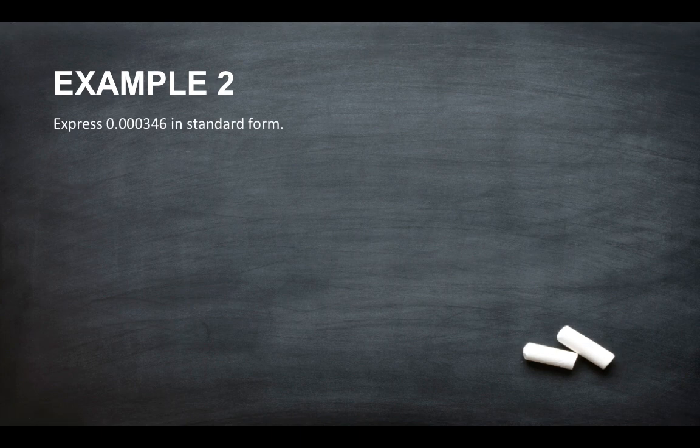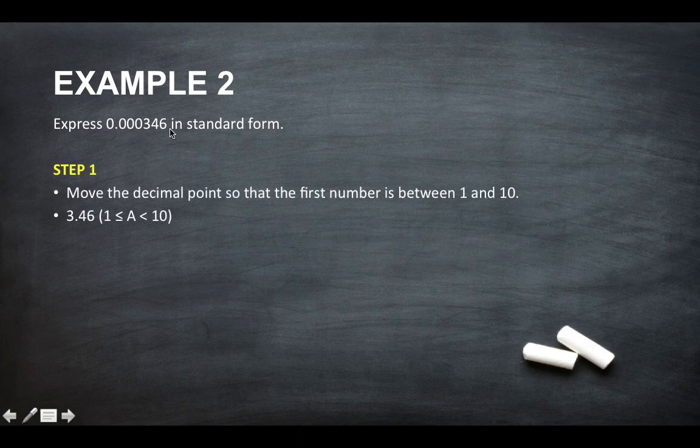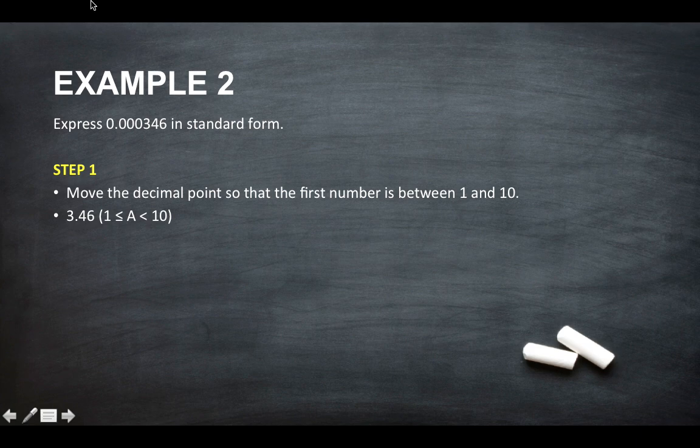Example 2: express 0.000346 in standard form. Step 1: move the decimal point so that the first number is between 1 and 10. So we've got to move this decimal point to make the number between 1 and 10.